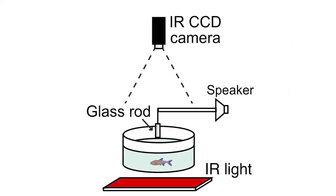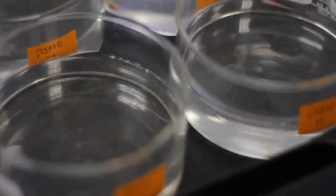To assay vibration attraction behavior, a vibrating glass rod is inserted into a glass bowl containing one fish in the dark. Fish are acclimated four days prior to the assay in conditioned water with a 12-12 light-dark cycle.